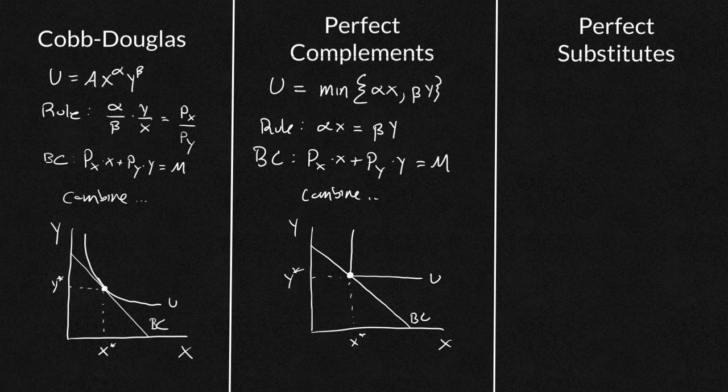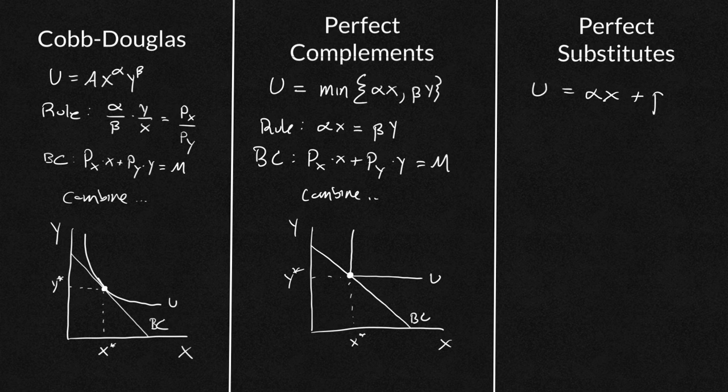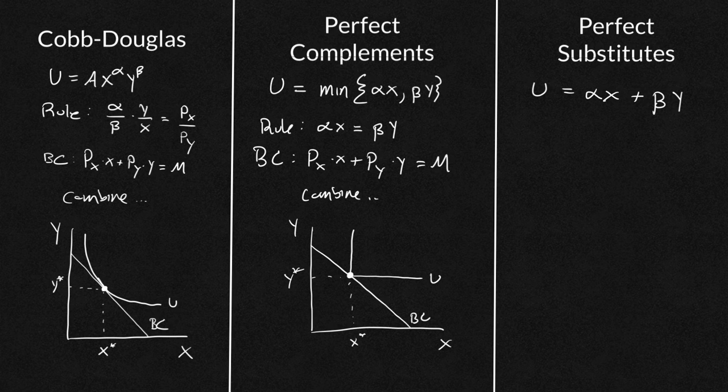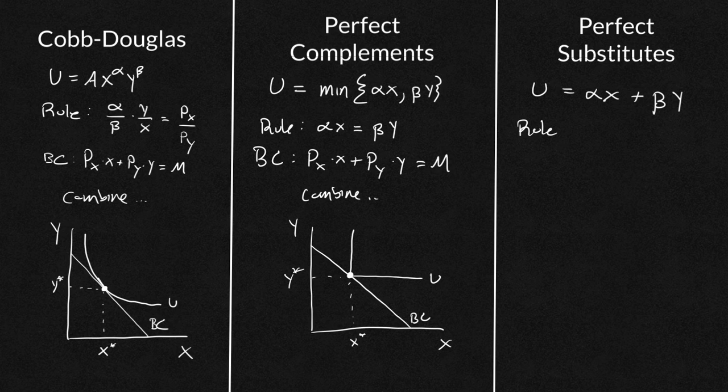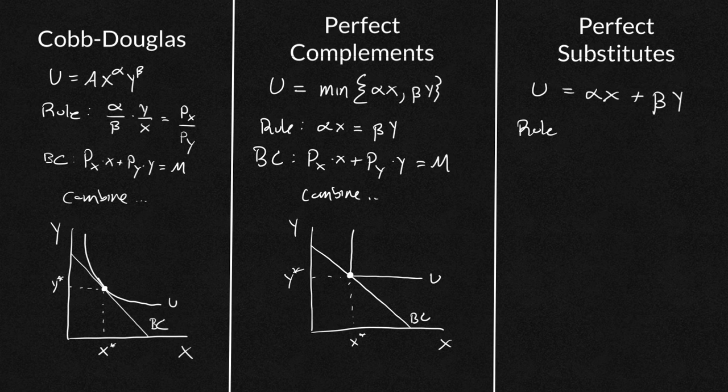Finally, we have perfect substitutes. This is when you have something that looks like, your utility function might be, let's say alpha X plus or minus beta Y. Now there are some rules that you can compare things. The easiest thing for me, and again, this isn't going into deep understanding. And for the micro purists out there are going to get mad at this video. This is simply just a review document for someone who might be going into an exam who has already studied all of these things.